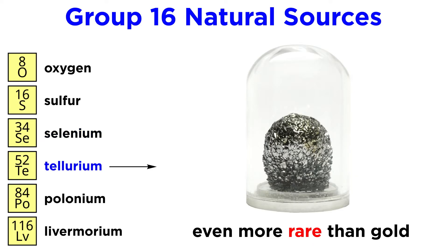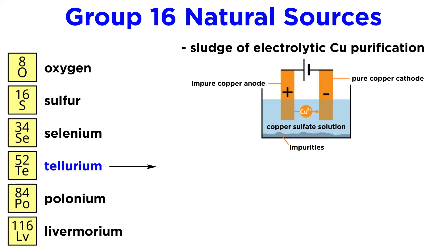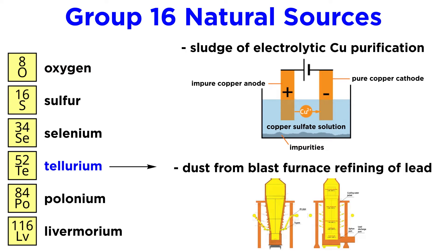Tellurium, on the other hand, is one of the rarest elements in Earth's crust, more so than gold. This is obtained primarily from anode sludges of electrolytic copper purification, much like selenium, and also from dust produced during blast furnace refining of lead.